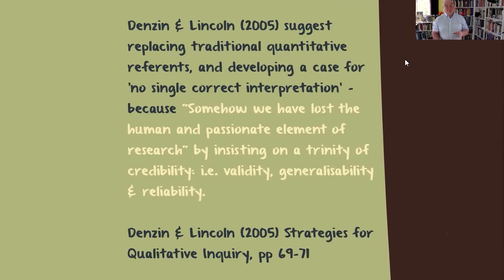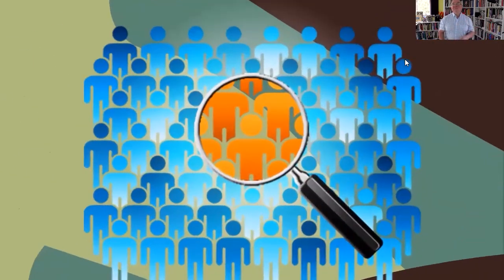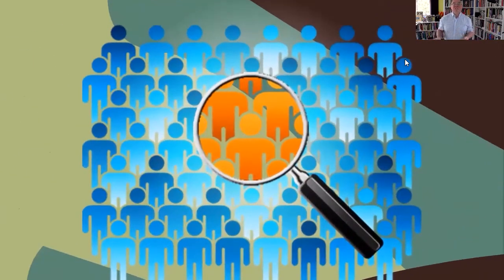Denzin and Lincoln are two great names in research methods, well worth looking at their publications especially on qualitative research. They say that somehow we have lost the human and passionate element of research by insisting on a trinity of credibility — which means validity — generalizability, and reliability. They question often taken-for-granted terms, especially generalizability, which is only a claim made of quantitative research. So if your study is purely qualitative, never bother saying it isn't generalizable, because everyone knows qualitative research doesn't make that claim.